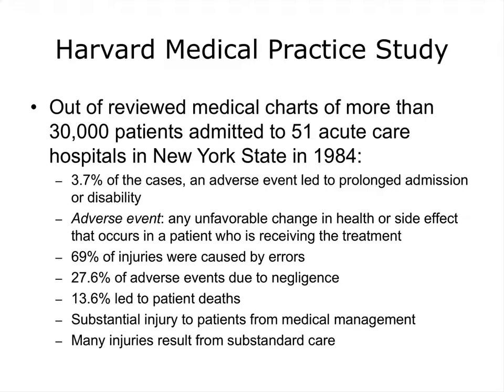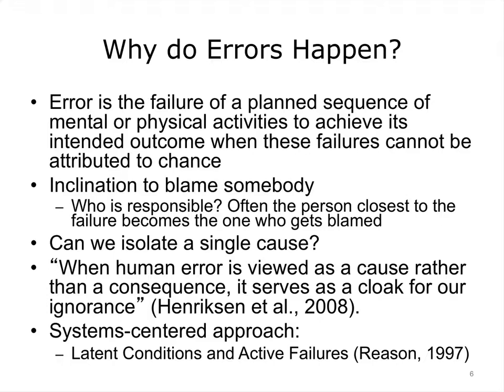We have established that errors are a matter of serious concern. According to one of the pioneers in this field, James Reason, error is the failure of a planned sequence of mental or physical activities to achieve its intended outcome when these failures cannot be attributed to chance. Too often the term human error connotates blame in a search for the guilty culprits, suggesting some sort of human deficiency or irresponsible behavior. Often we cannot isolate a single cause. Human factors researchers emphasize the need for a systems-centered approach. James Reason introduced an important distinction between latent and active failures.